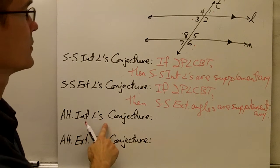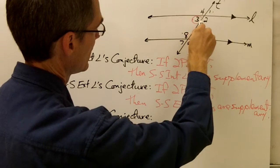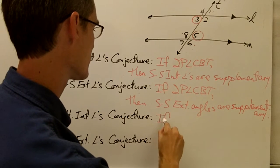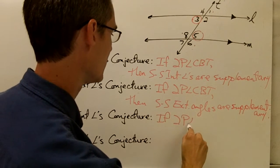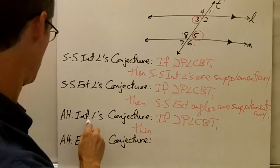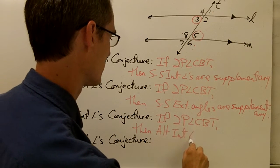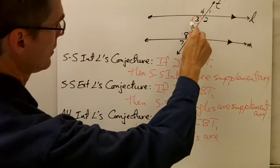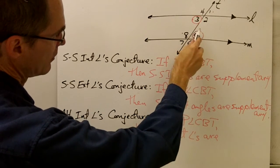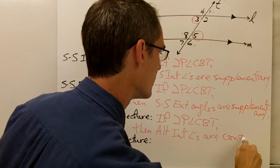Alternate interior angles conjecture: give me a pair of alternate interior angles — let's say angle 3 and angle 5. These are alternate interior angles. So my conjecture is: if two parallel lines are cut by a transversal, then alternate interior angles are congruent. Both of these angles look acute, so I'm going to say those two angles are congruent.